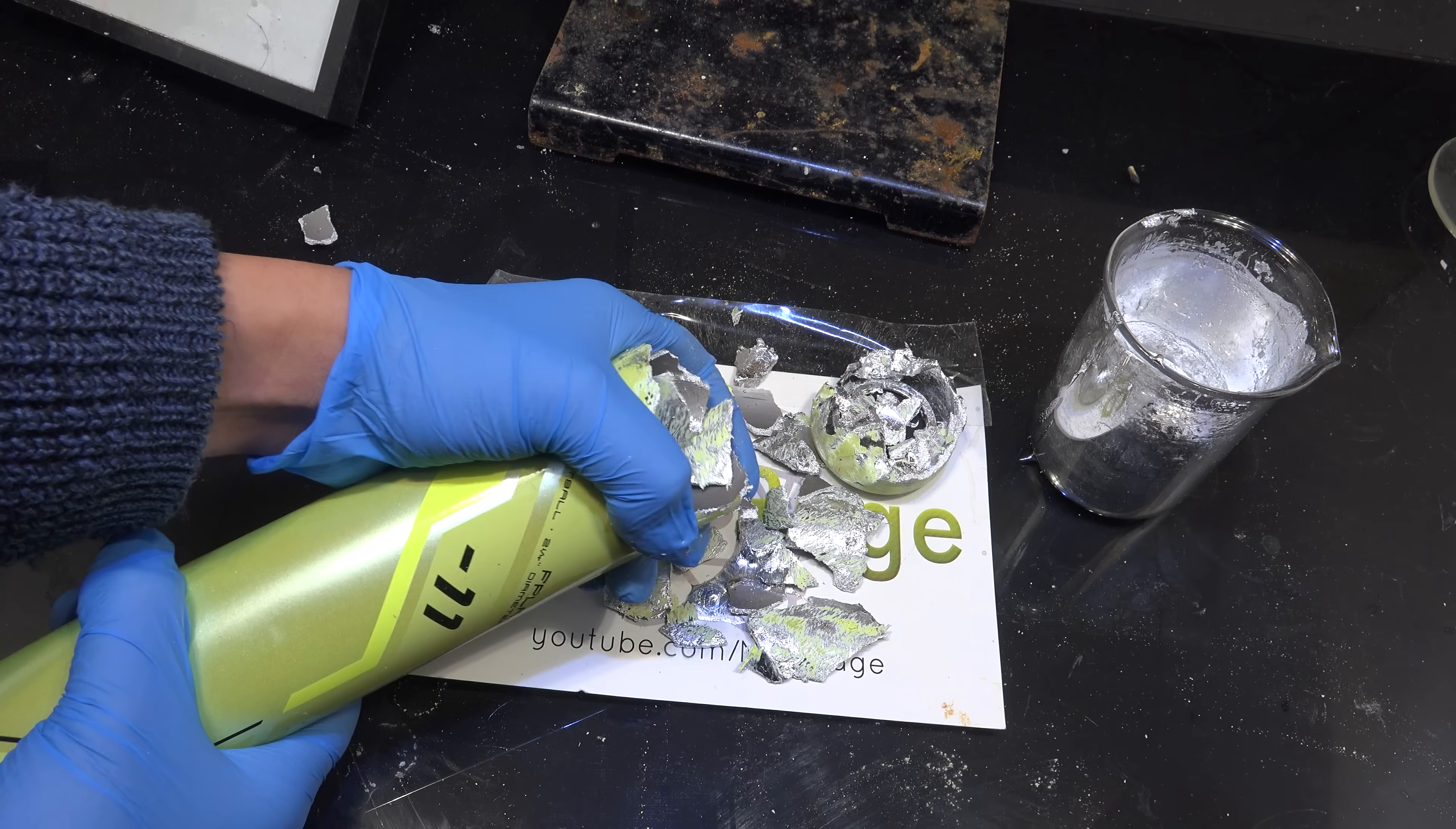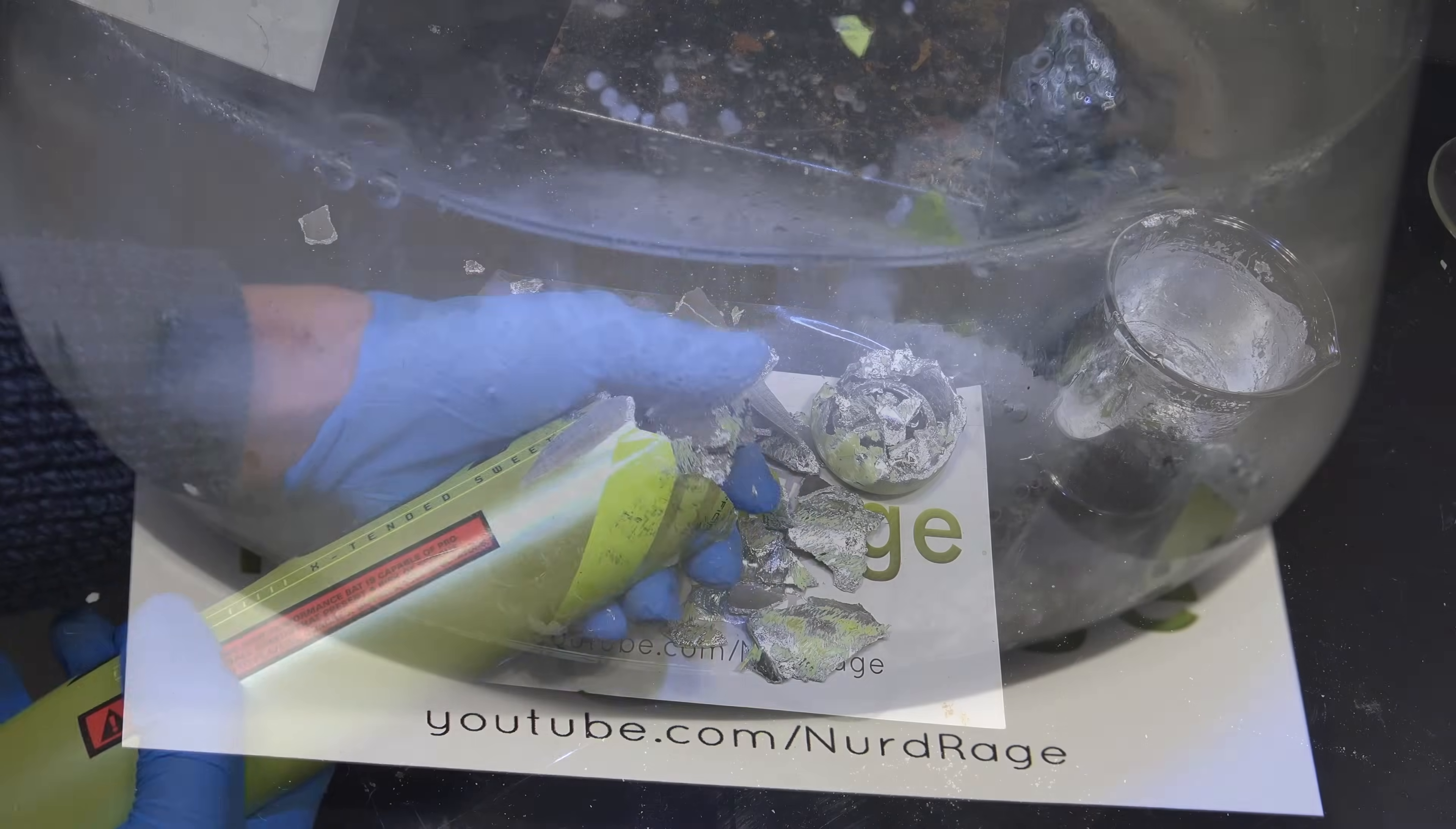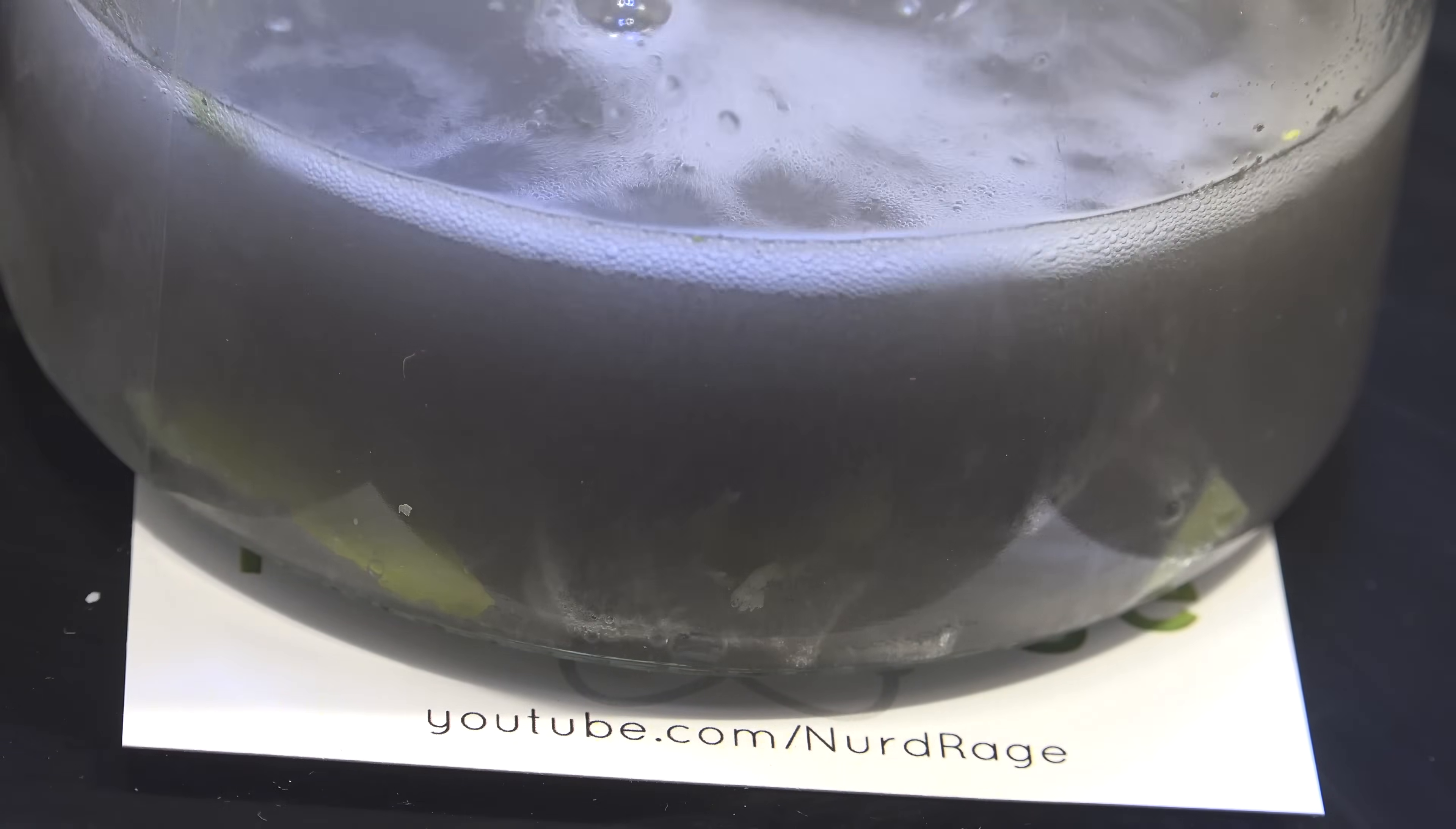Greetings fellow nerds. You've seen me destroy aluminum with gallium in various videos and some of you have asked how to recover it from the spent aluminum. In a previous video I showed an easy method using sodium hydroxide decomposition that essentially destroys the aluminum but leaves the gallium behind.